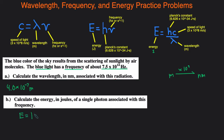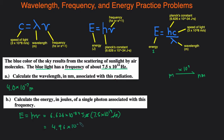First, E equals Planck's constant times frequency. Planck's constant is 6.626 times 10 to the negative 34 joules per second. We multiply by the frequency given earlier: 7.5 times 10 to the 14th seconds to the negative 1. The seconds cancel out and we're left with joules. So we do 6.626 times 10 to the negative 34 multiplied by 7.5 times 10 to the 14th, and that gives us 4.97 times 10 to the negative 19 joules. With two sig figs, we round up to 5.0 times 10 to the negative 19 joules, because the digit after the second sig fig is greater than 5.